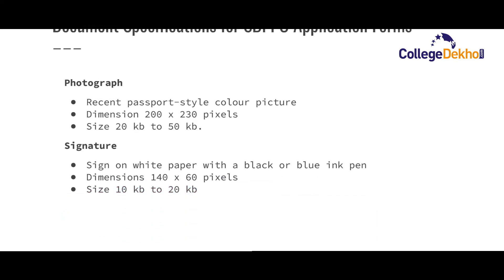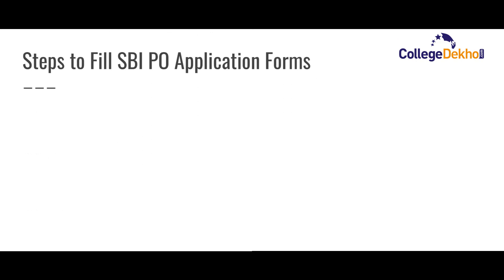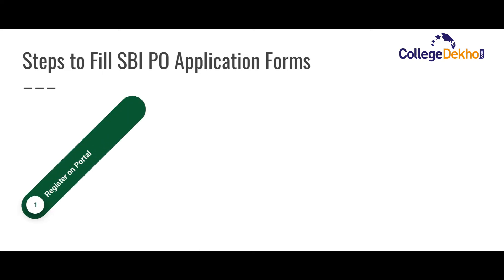Now that we are done with documents and application fee, let us look at the steps to fill the SBI PO application form. The very first step is to go to the official website of SBI PO and register on the portal. For registration, you'll need your personal email ID and contact number. Make sure you enter your personal contact number and email ID, as all further exam details will be sent there. After registration, you'll receive your registered email ID and password on your mobile number and email, which you can use to log in again and fill your application form.